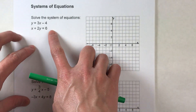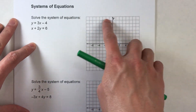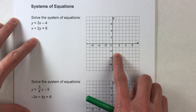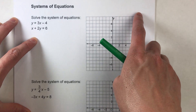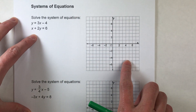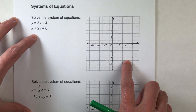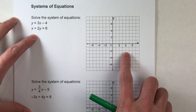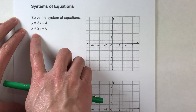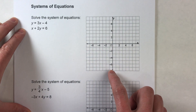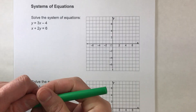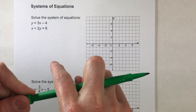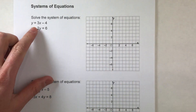The easiest way to do this is by graphing them both. Where the two lines intersect is going to be the one combination of x and y that works for both of them. In other words, we're looking for the point of intersection. So let's go ahead and do that.